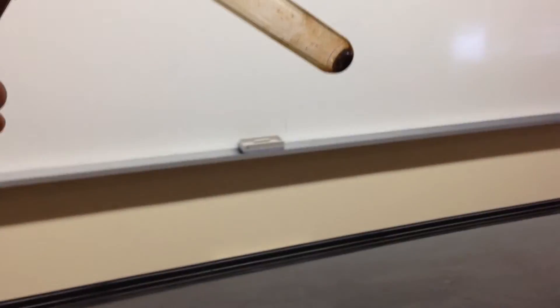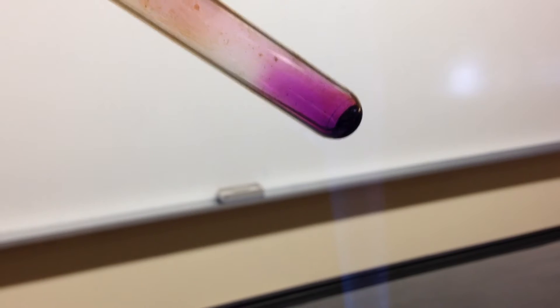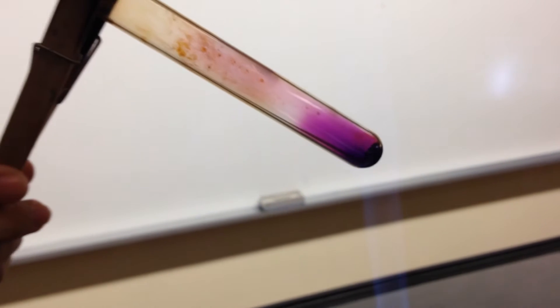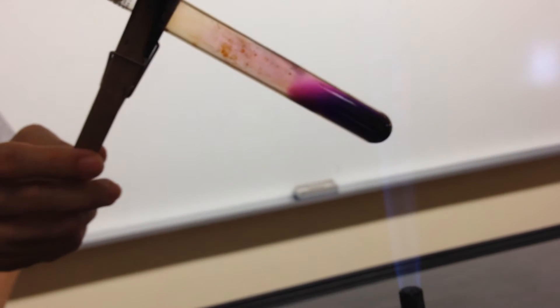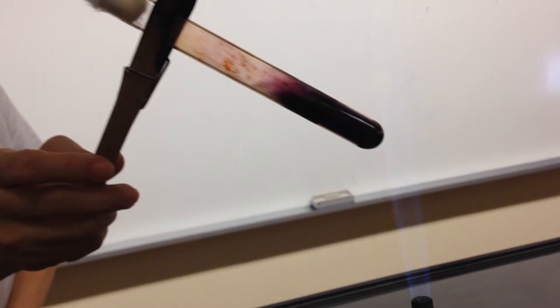When a small amount of iodine crystals is placed into a test tube and heated, a change in state happens. Notice how the solid iodine crystals form a purple vapor. This change from solid to gas is known as sublimation.